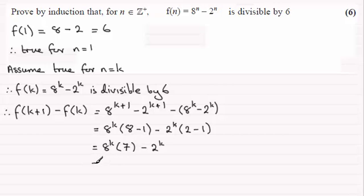So if that's the case I could think of this as 6 times 8 to the power k. Alright. Then I've got another 8 to the power k, so I've got 7 of them. Okay. And then minus 2 to the power k. And now I'm starting to see the light. Now what I notice then is 8 to the power k minus 2 to the power k. That is f(k).